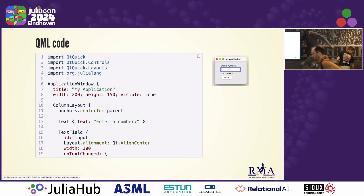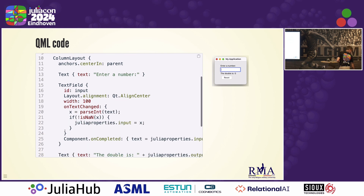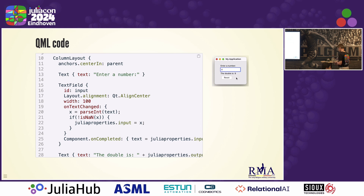The QML file is basically a list of different components. The main one here being the text field that, when you enter a value, will double this value by calling a Julia function. So that's a very simple example.